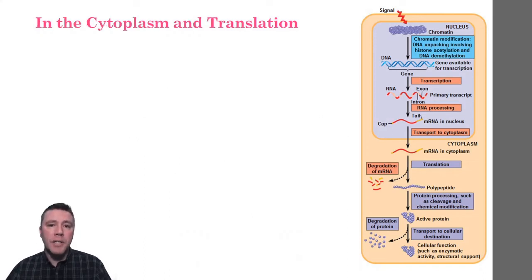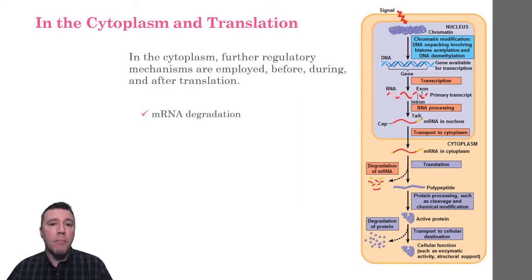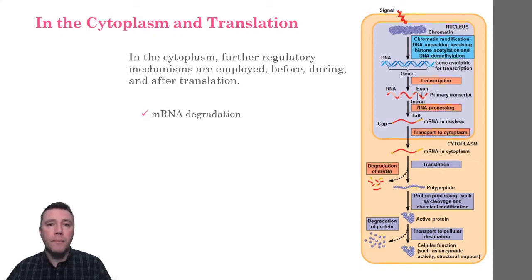Beyond the nucleus, additional regulatory mechanisms are active before, during, and after translation. The duration of a messenger RNA molecule's existence in the cytoplasm is important in determining the pattern of protein production in a cell. mRNA in multicellular eukaryotes may exist for a few hours, a few days, or even a few weeks. The length of time that a messenger RNA is present in the cytoplasm is directly proportional to how much of the protein resulting from it would be created. For some mRNAs, the initiation of translation can be blocked by regulatory molecules that bind to portions of it, preventing ribosomes from attaching.